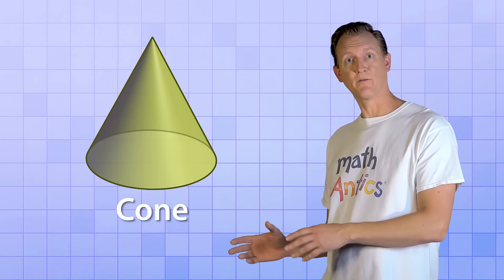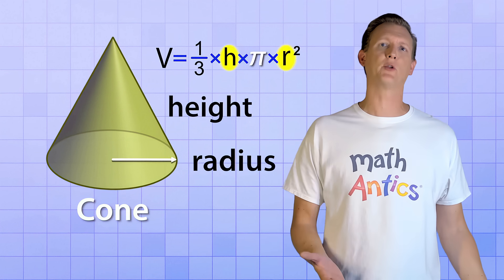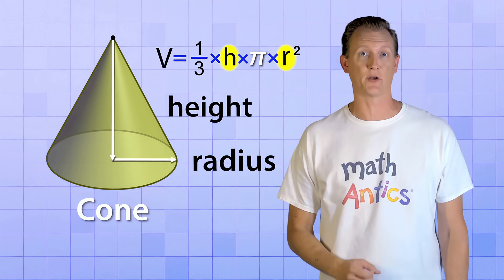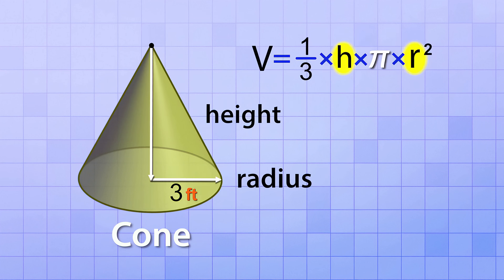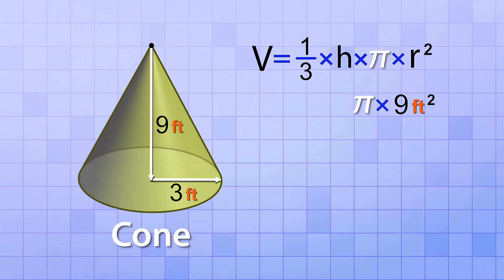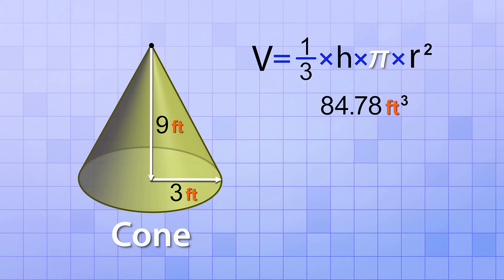Now let's try a cone. To use the formula, we need the radius of the circular base and the height — the distance from the tip straight down to the center of the base. The radius is 3 feet and the height is 9 feet. First, square the radius: 3 feet times 3 feet is 9 feet squared. Next, multiply by pi: 3.14 times 9 gives 28.26 feet squared — that's the area of the base circle. Then multiply by one third times the height: one third times 9 feet is 3 feet. So 3 feet times 28.26 square feet gives 84.78 cubic feet — the volume of the cone.